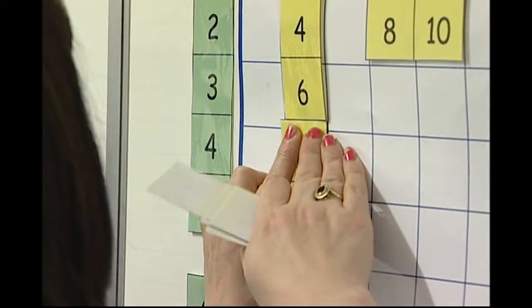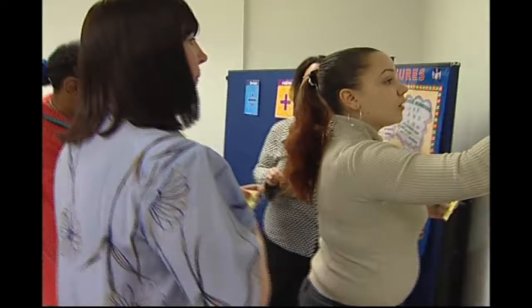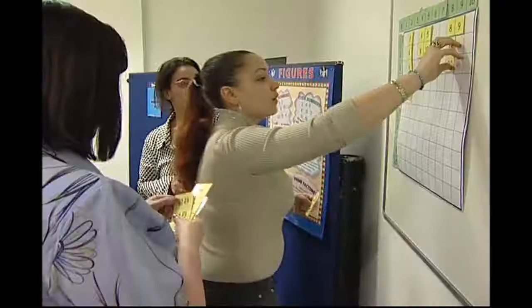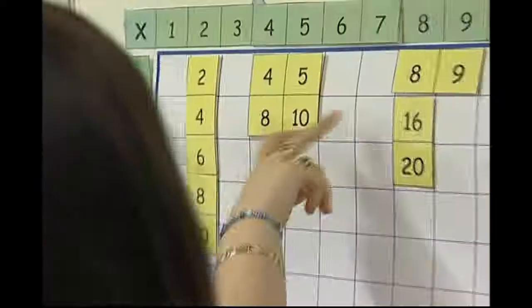I want you to kind of support each other and help each other when you're doing this, and if you're not sure, ask each other. What are you doing, Sonia, to help you put the numbers on? I'm just going along there doing two, four, six, eight, ten - I'm just doing the two times table.